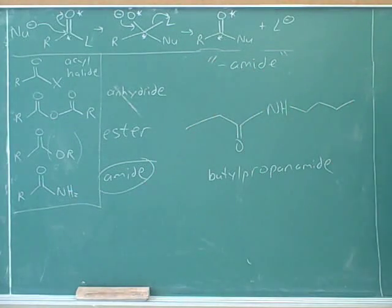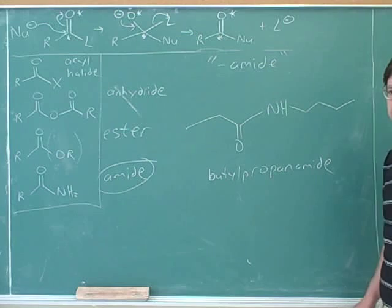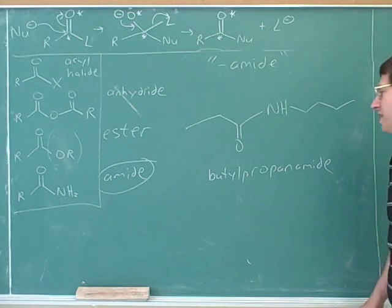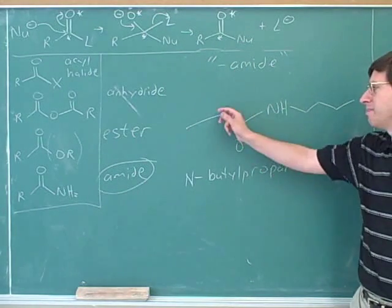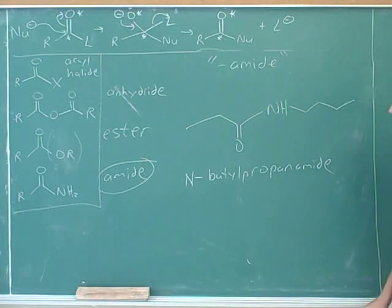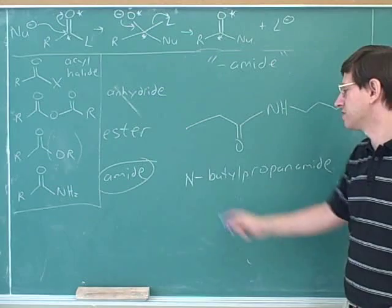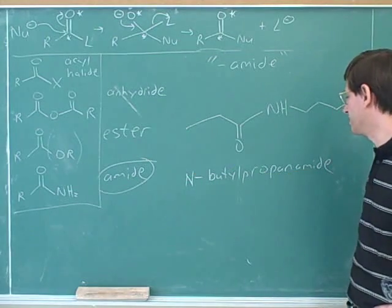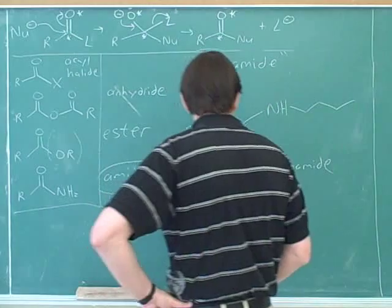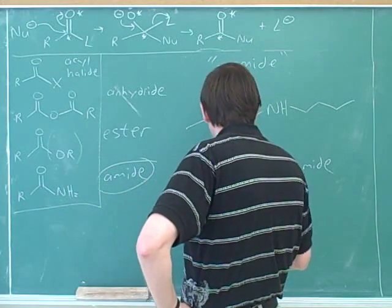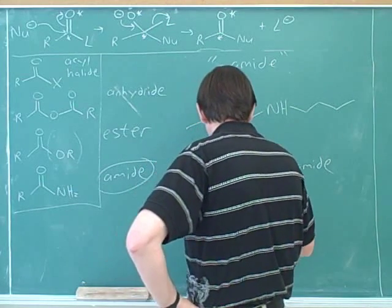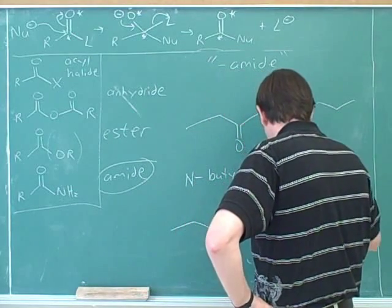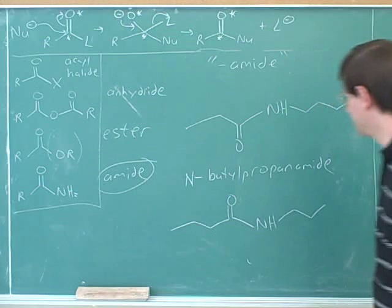This is still part of the regular name. But now we have to see what the location of it is. And normally we use numbers to give locations. But here they came up with a clever trick. This is called N-butyl propanamide to indicate that the substituent is not on the main chain, but it's on this nitrogen over here. In the past we've always used numbers as locators, and here we're just using an N for the nitrogen. So this would be N-butyl propanamide. All one word. So that's given name to this one.